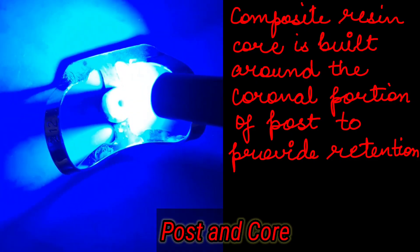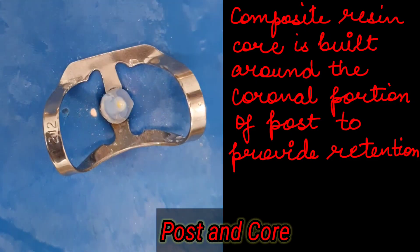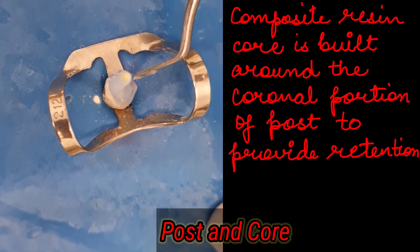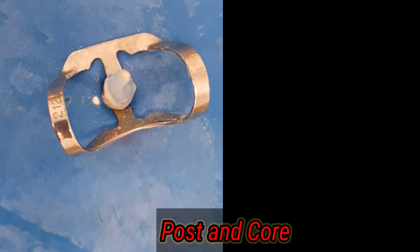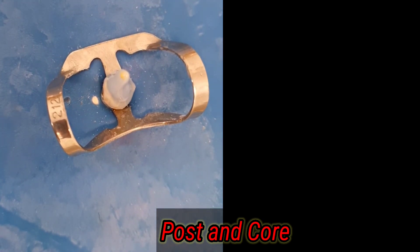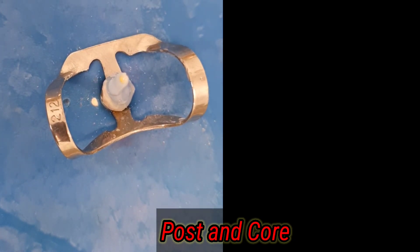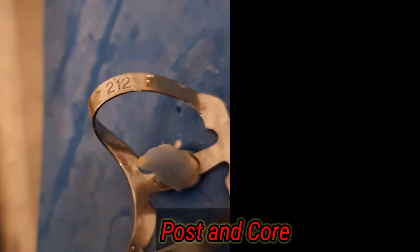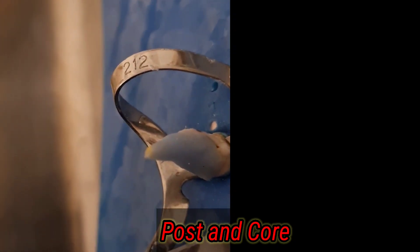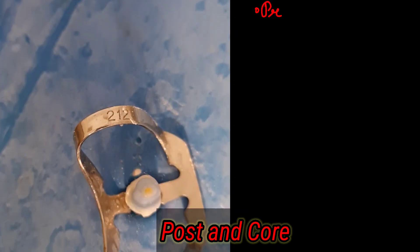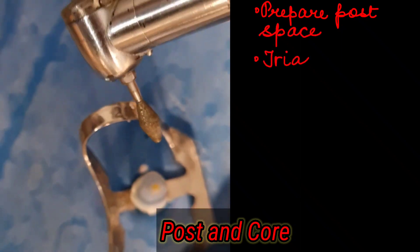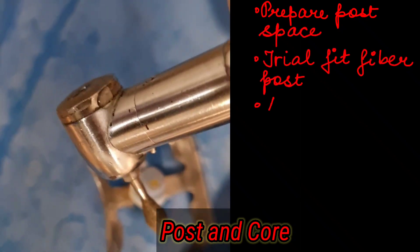A composite resin core is built up around the coronal portion of the post to provide retention for the restoration or provide retention to the crown. However, this resin core should be limited in the height since large buildup in the composite may increase the risk of complications. For this reason, a bulk fill composite is recommended for its high fracture resistance.